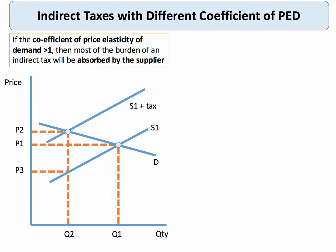When demand is relatively elastic we get a sizable quantity reduction and a fairly modest price increase. The tax itself is the vertical distance P2 to P3. The consumer always pays the increase in price — the green shaded area shows the consumer's burden. The producer has been able to pass on some of the tax but not all — in fact less than half — so the supplier absorbs the rest. The government gets tax revenue P2 P3 multiplied by Q2, of which about two-thirds is paid by the producer and about one-third by the consumer.